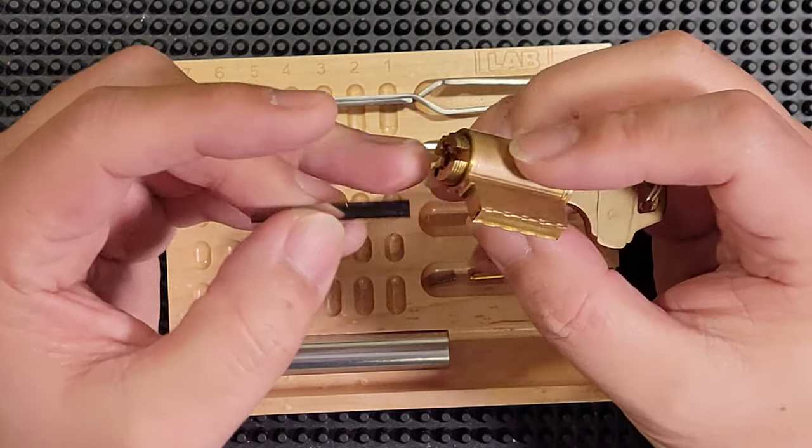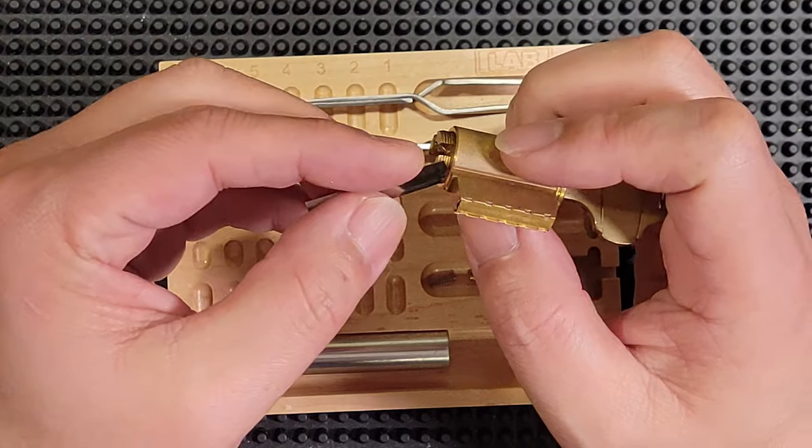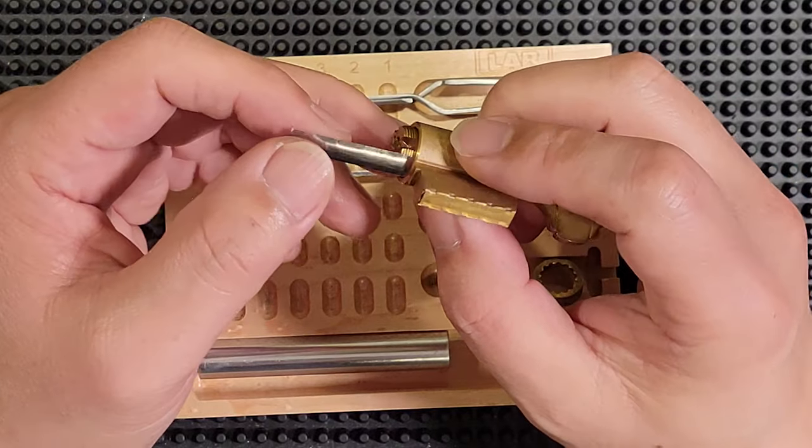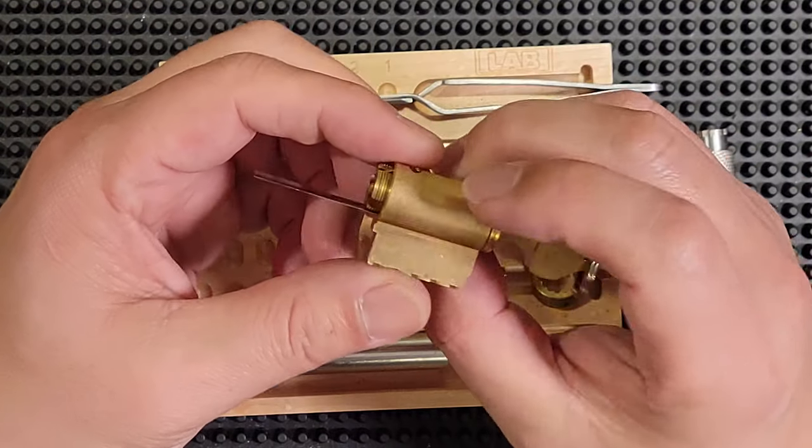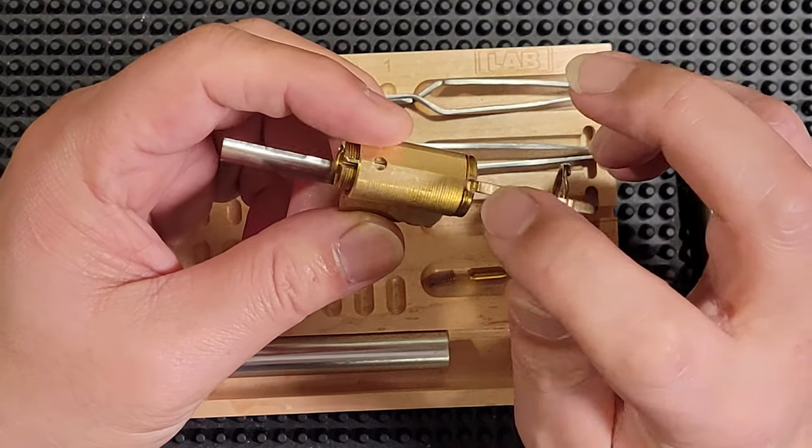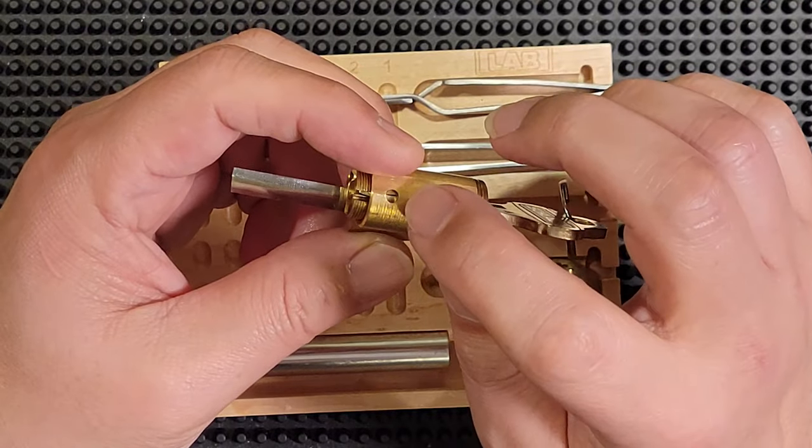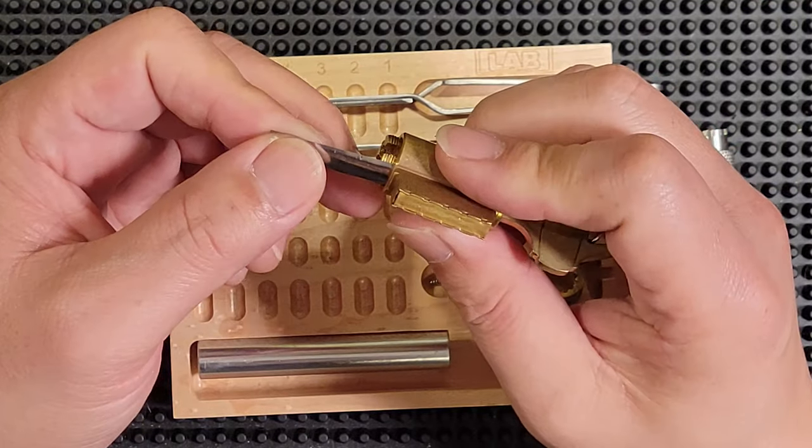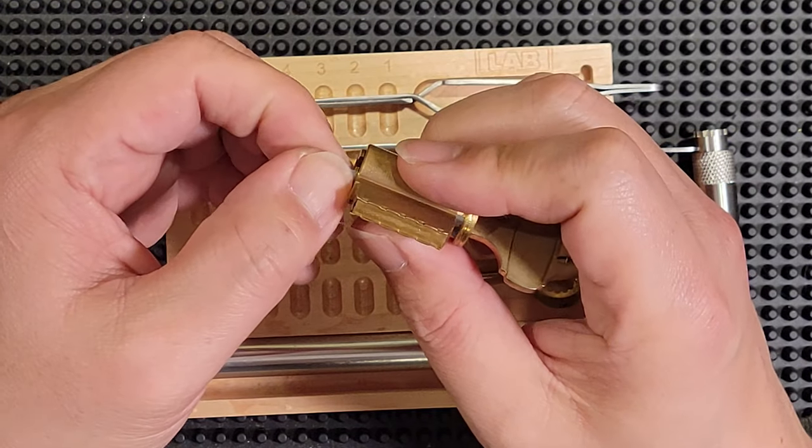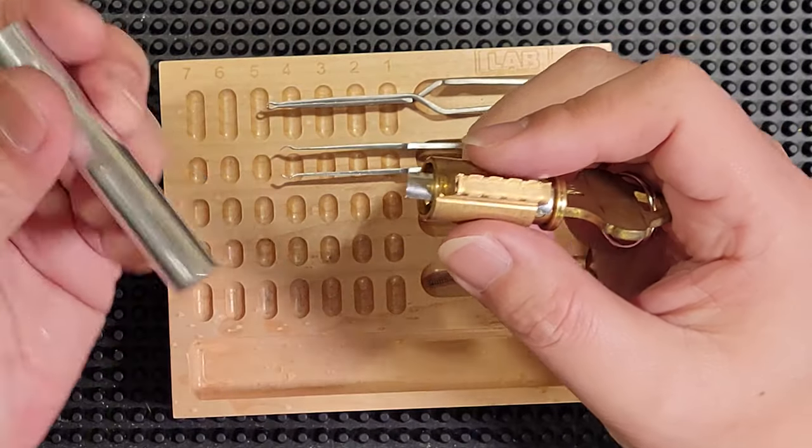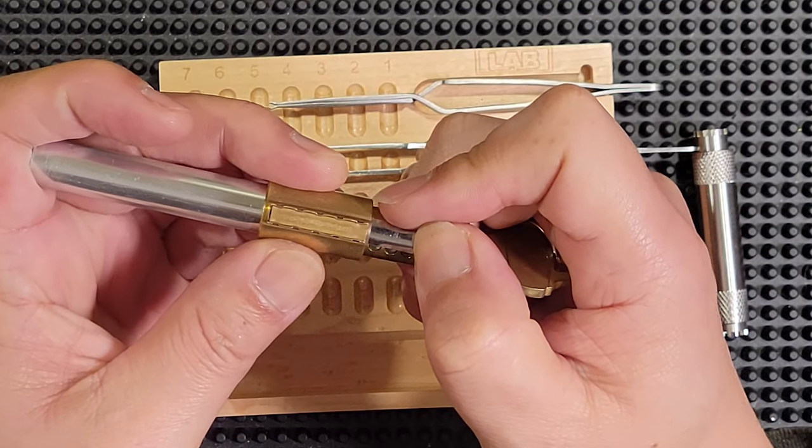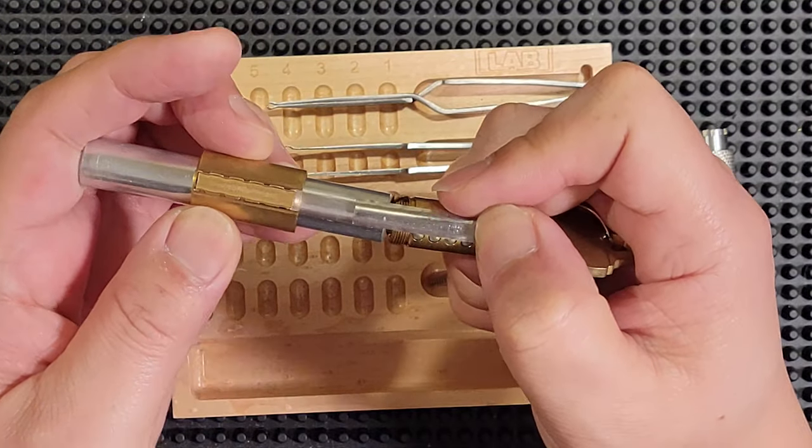I did say that the detent pin is under spring pressure. So you do have to pay a little bit of attention to make sure that doesn't go flying and you lose either the pin or the spring. The key does hold that detent pin captive though. So we don't have to worry about that quite yet. So let's get the shim in and there we go. And let's get our follower and push the plug out. And there we go.